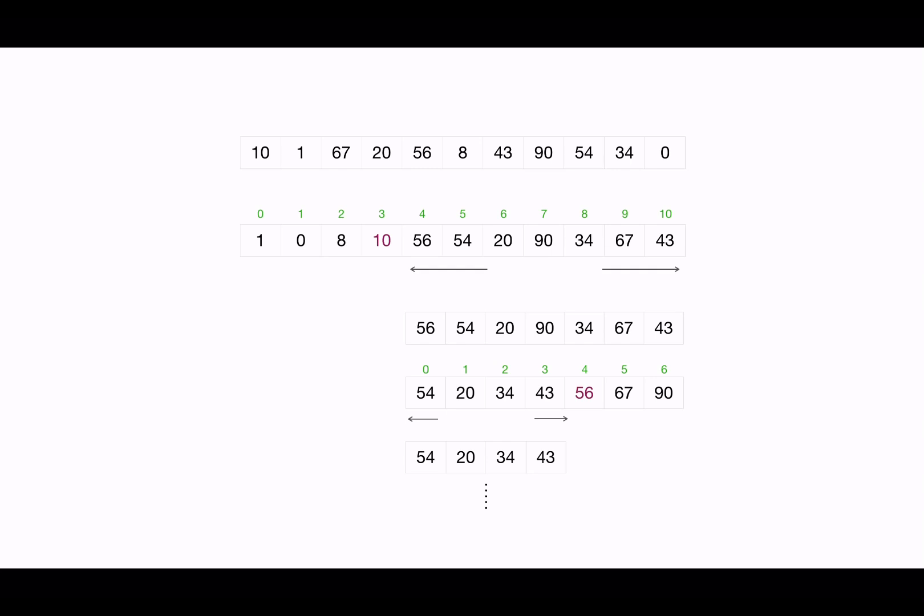Suppose the pivot is 10. We compare every element with this pivot and rearrange the array, and we see that 10 gets the third position. Is this the median? No — the median index is 5, so we need to search for the median in the right subarray, since it is present to the right of 10. Now we choose a pivot from this right subarray; let's choose 56. After the iteration, 56 comes at the fourth index in the array, but we are looking for the second element, so we keep searching in the left subarray because the median is now to the left of 56.